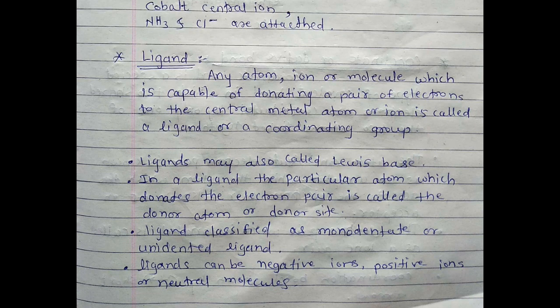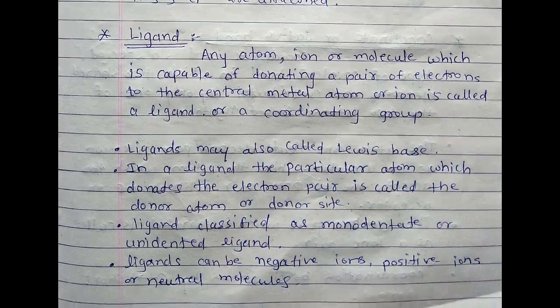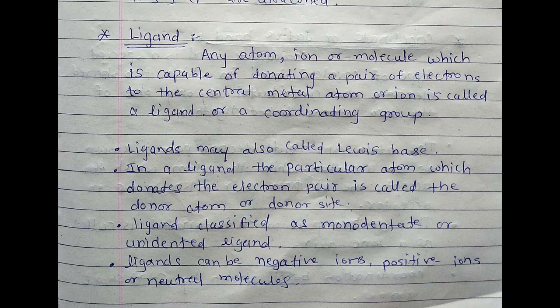In ligand, the particular atom which donates the electron pair is called donor atom or donor site. Ligands classified as monodentate or unidentate ligands.